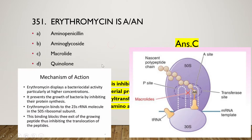Erythromycin displays bactericidal activity, particularly at higher concentrations. It prevents bacterial growth by inhibiting protein synthesis. Erythromycin binds to the 23S rRNA molecule in the 50S ribosomal subunit, and this binding blocks the exit of the growing peptide, thus inhibiting the translocation of peptides.